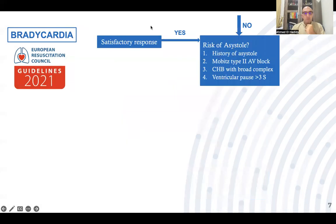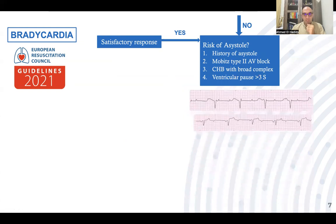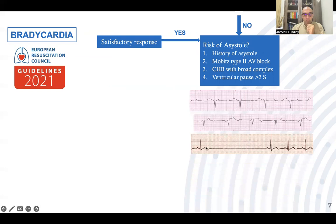If atropine 0.5 mg was given with a satisfactory response, or there was no life-threatening condition from the start, we search for risk of asystole: history of asystole, current rhythm showing second-degree heart block Mobitz type 2, complete heart block with broad complex, or ventricular pause more than three seconds. On the rhythm strip, Mobitz type 2 shows second-degree heart block, and complete heart block shows complete dissociation between atrial and ventricular activity, or ventricular pauses with no QRS complexes for more than three seconds.